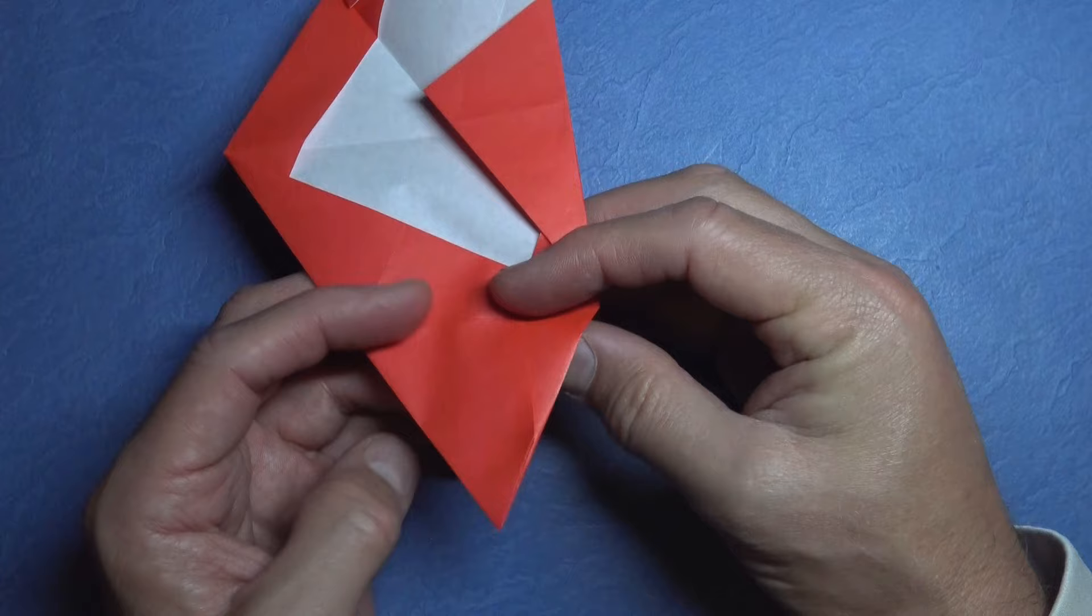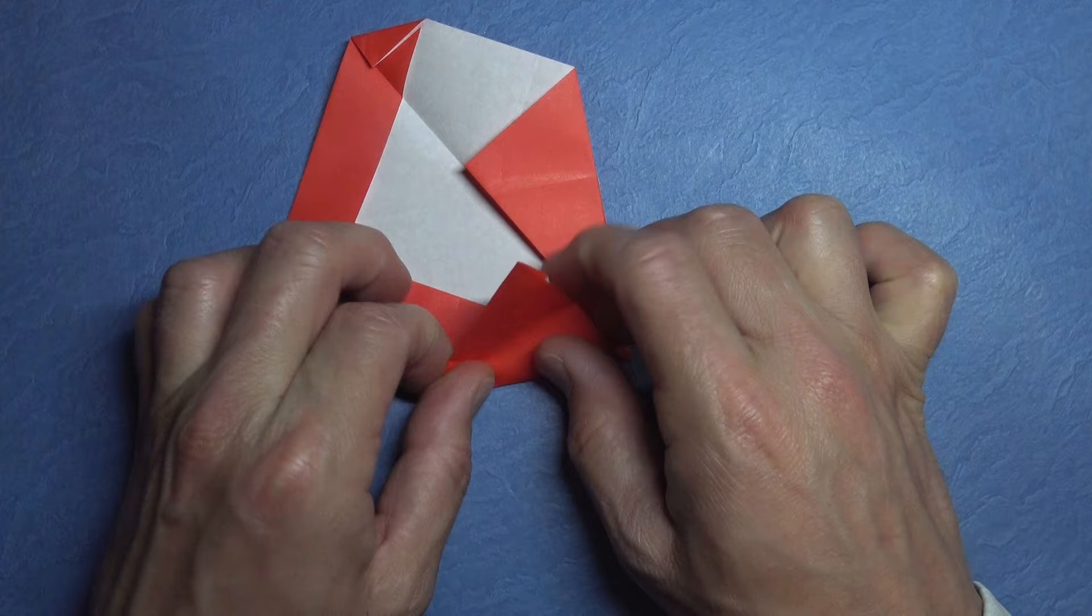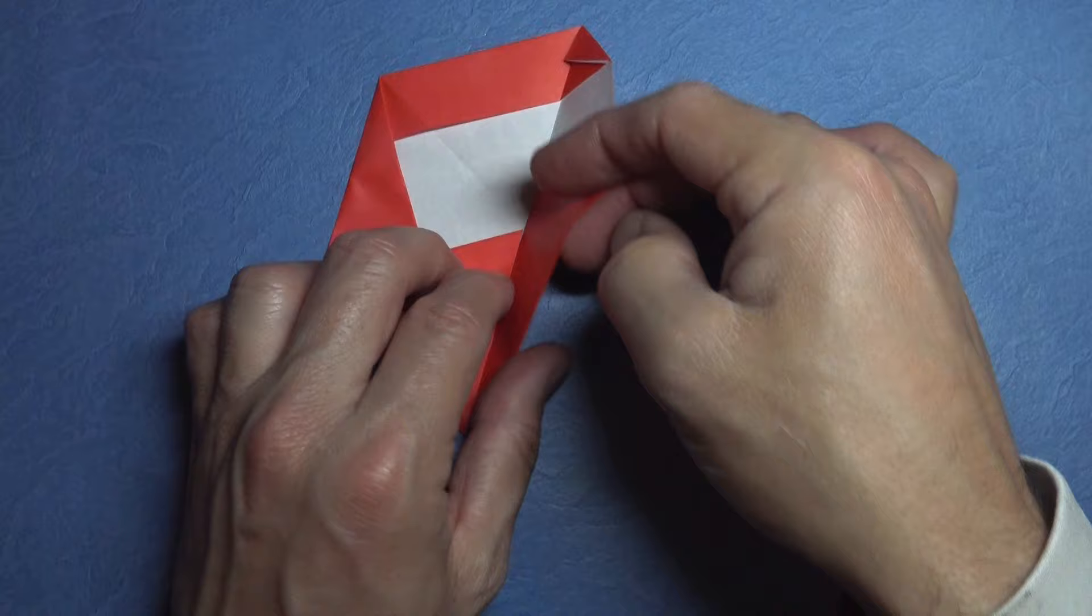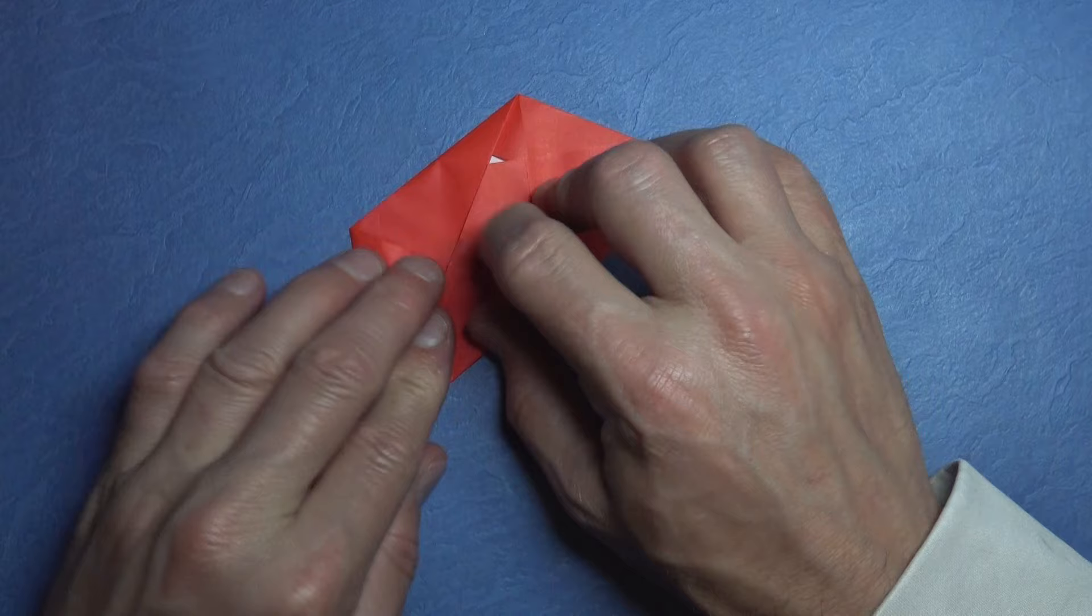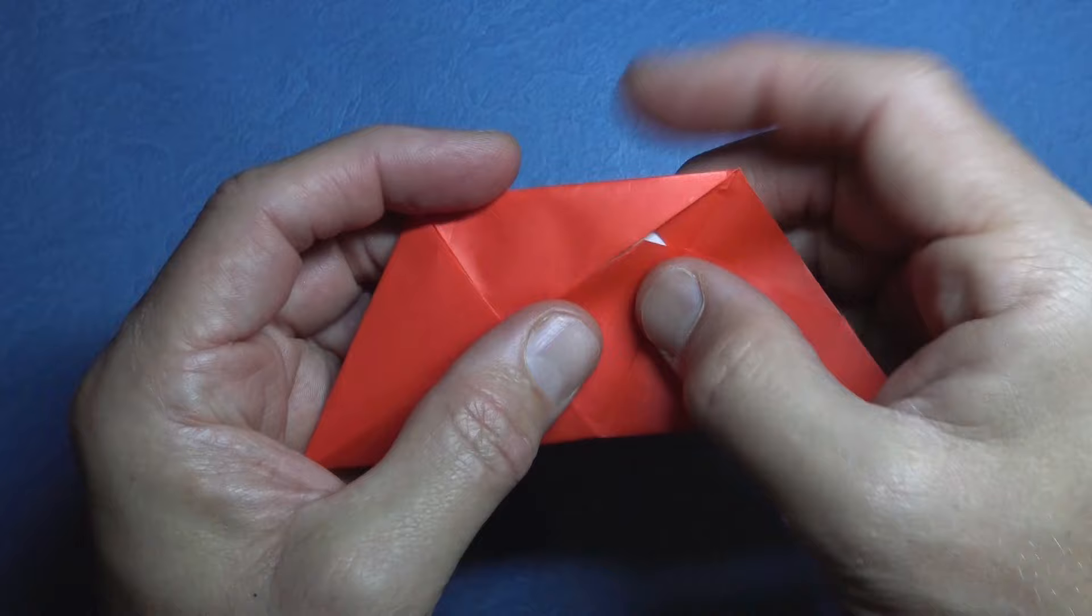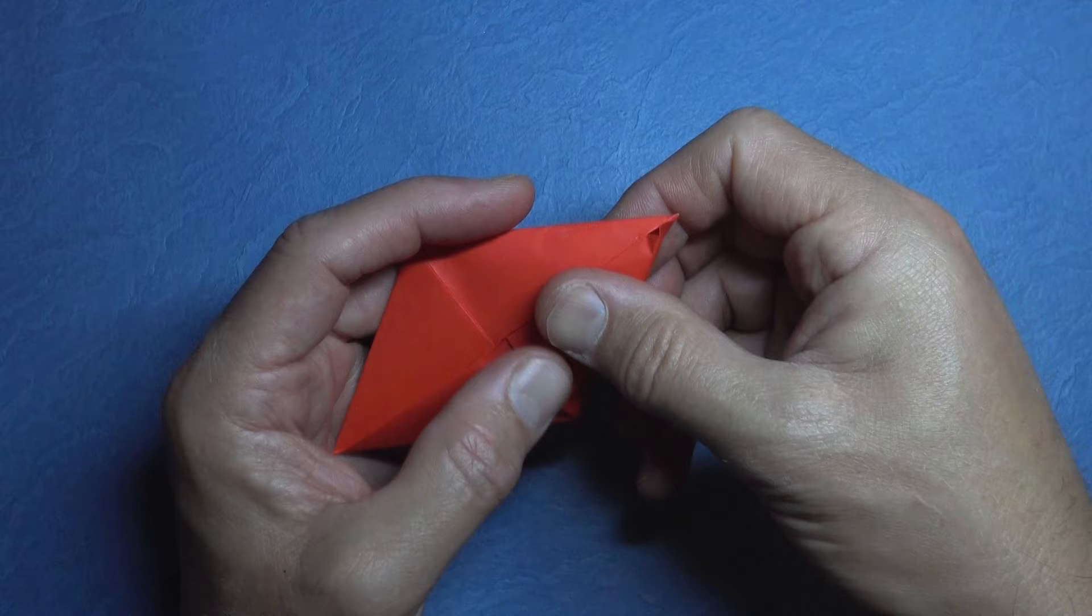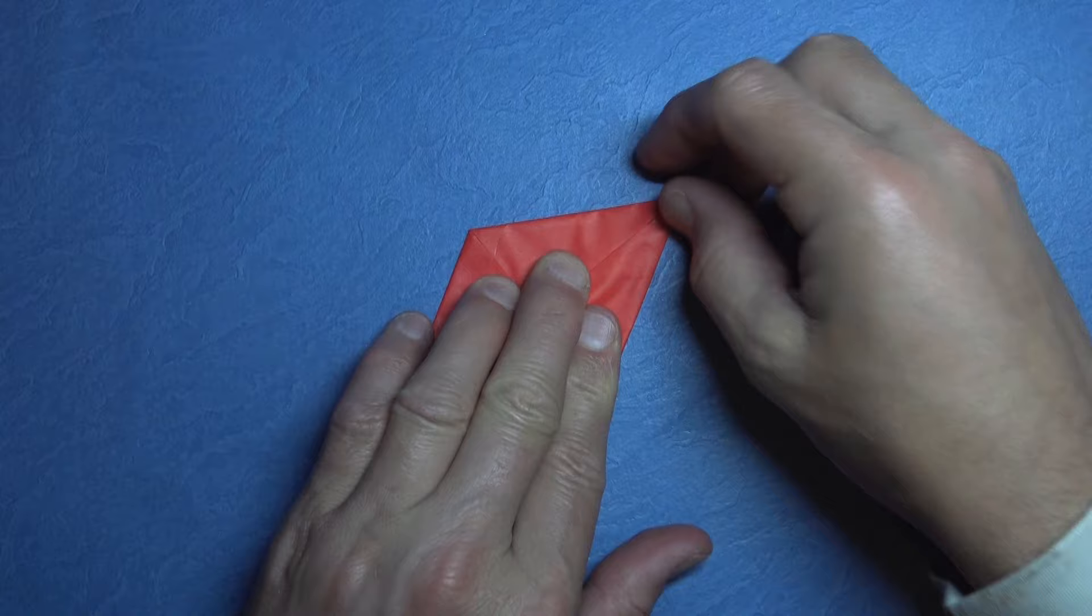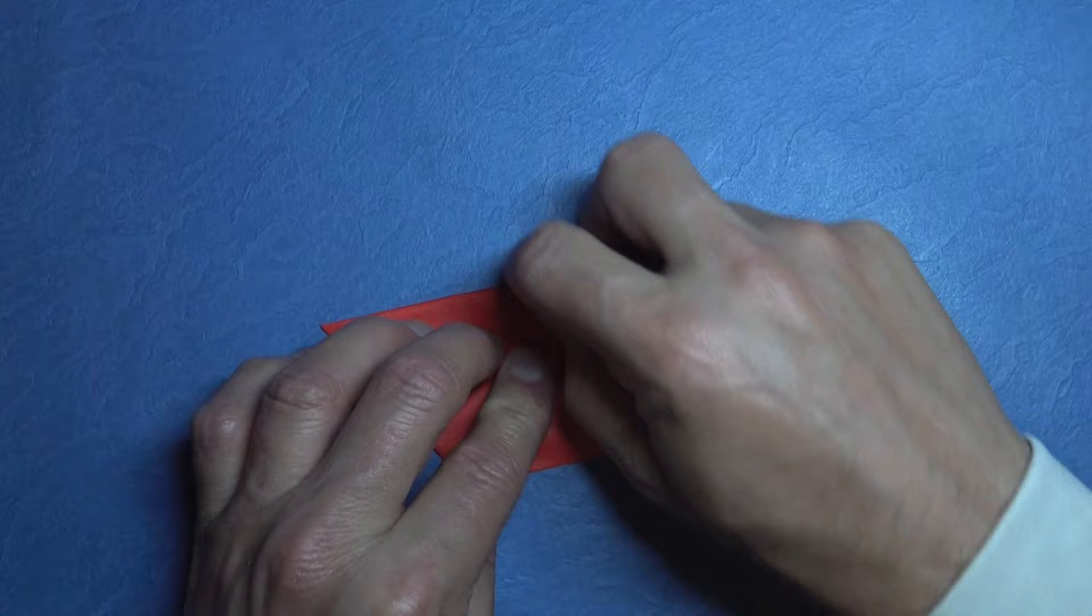And fold the layers down so they don't slide, and refold this flap. And now fold this triangle and fold it and open this pocket and refold it, slipping the corner inside the pocket, and crease it sharply. And there it is.